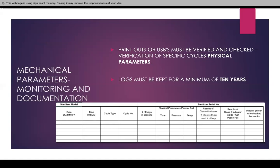Some sterilizers have USB devices, others have printouts, others don't have anything. If you have a USB plugged in within your sterilizer, you have to download the data on a secure computer that you can keep a record of for 10 years showing that it has passed — temperature, pressure, and time. If it is a printout, you must also record and keep those, and it will indicate whether it passed or not.